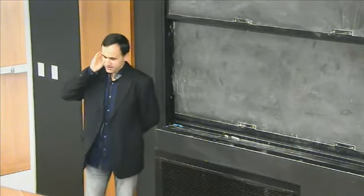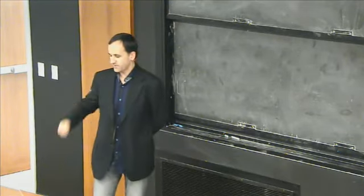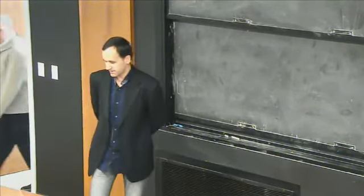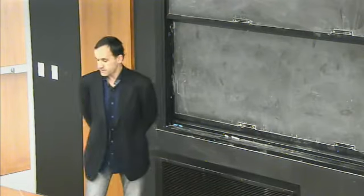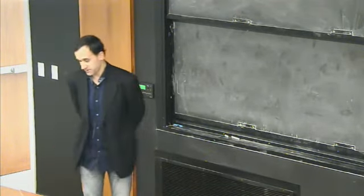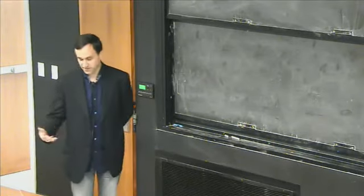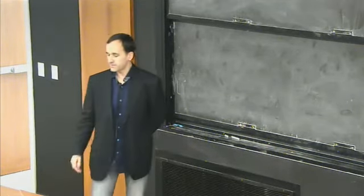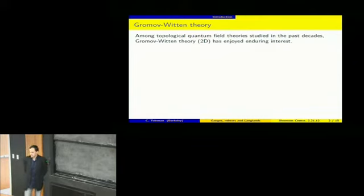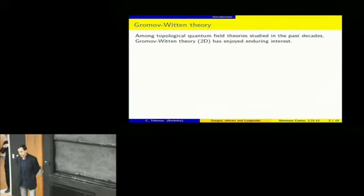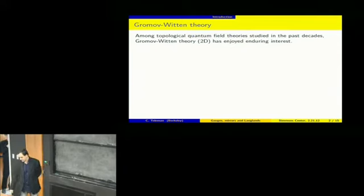I'd like to talk about something I've been thinking about for a number of years. I've arrived by a very torturous route at some answer, which turns out to have been known in some form on the physics side. I learned that from talking to Ed Witten when I arrived here, and it completely changed the way I'm going to present the material. Let me start by connecting to Kenji Fukaya's talk last week and remind you that Gromov-Witten theory is one of the quantum field theories that's come up in the past decades and is still running very strongly. Among two-dimensional field theories, it's the one gathering the most interest.